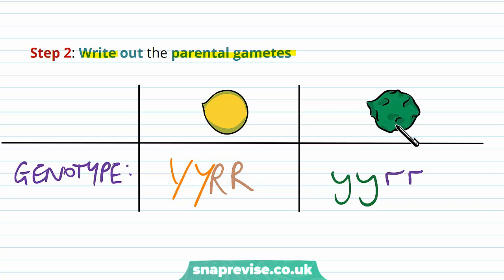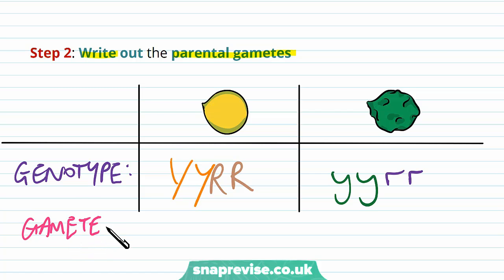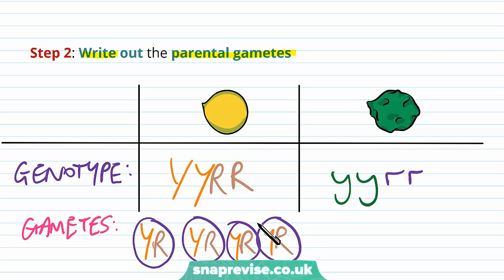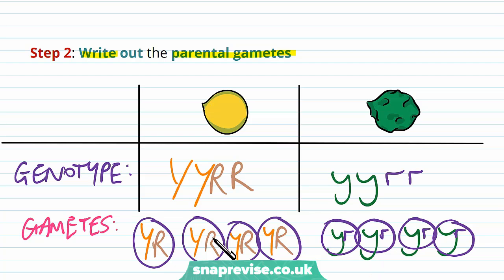Then we work out the parental gametes. Remember, in the organism there are two copies of every gene, but gametes only have one copy of each gene. The gametes for the yellow-round seed must carry one allele for colour and one for shape. Since it's YYRR, all gametes will always carry a dominant allele for colour and a dominant allele for shape — YR. Similarly, the green and wrinkled seed can only ever make yr gametes.